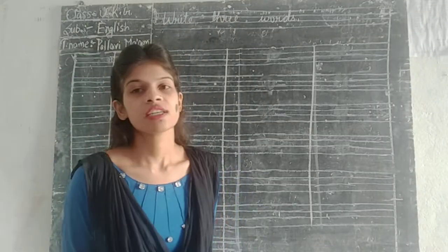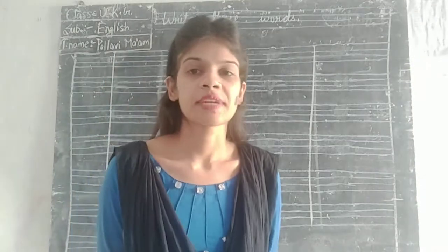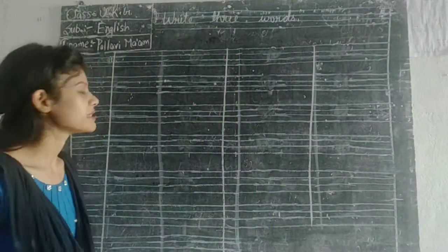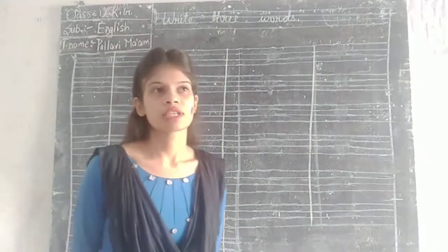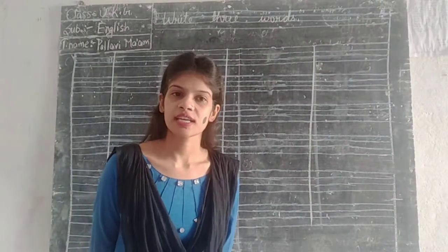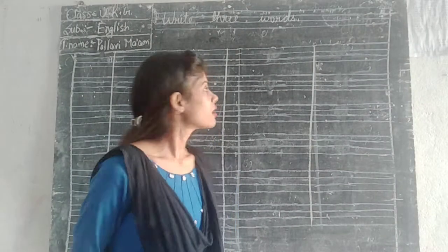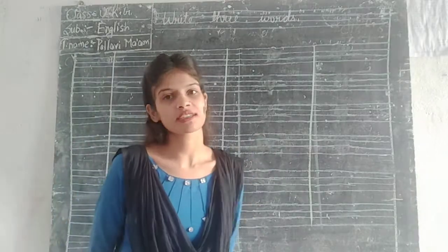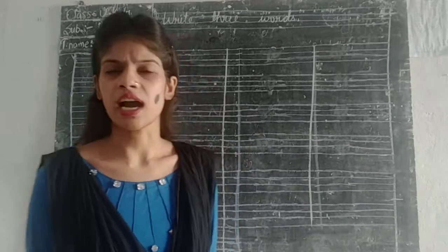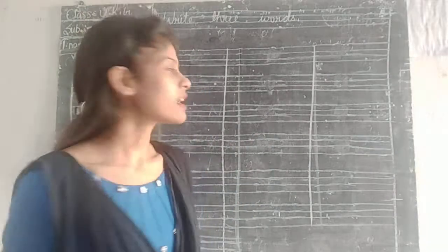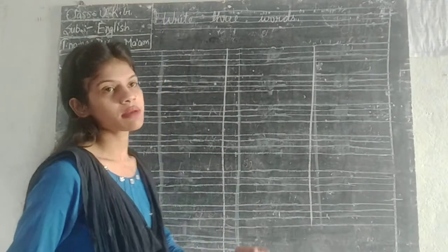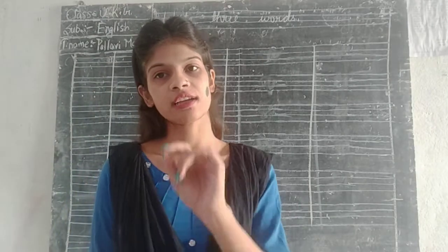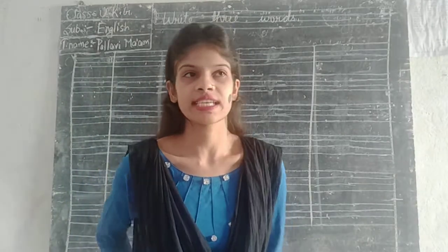Good morning everyone. Last class we knew A, B, C, D. What did we do? Small letters and capital letters. What do we do? Write three words. From A to Z, we write three words.